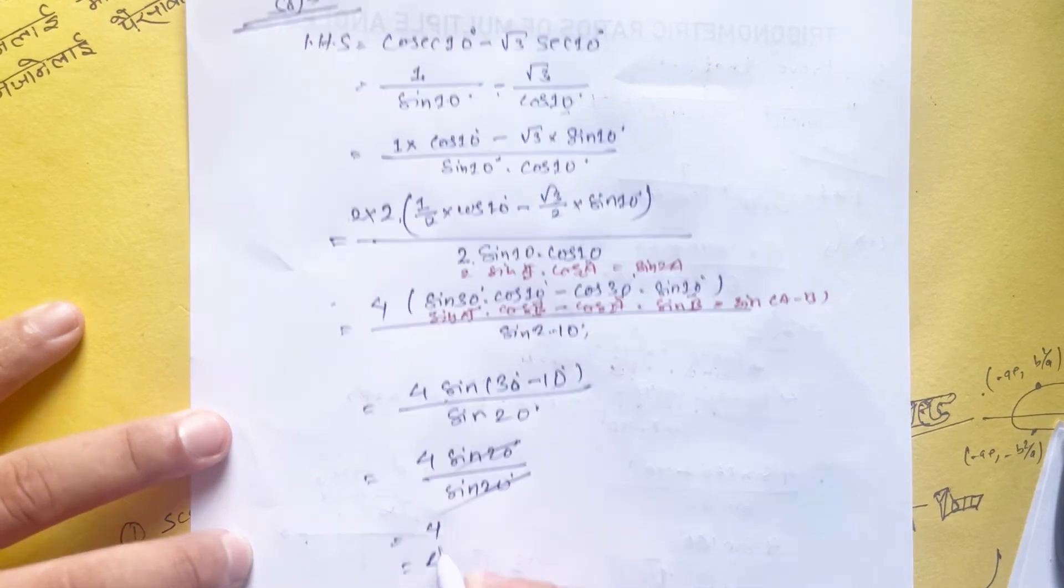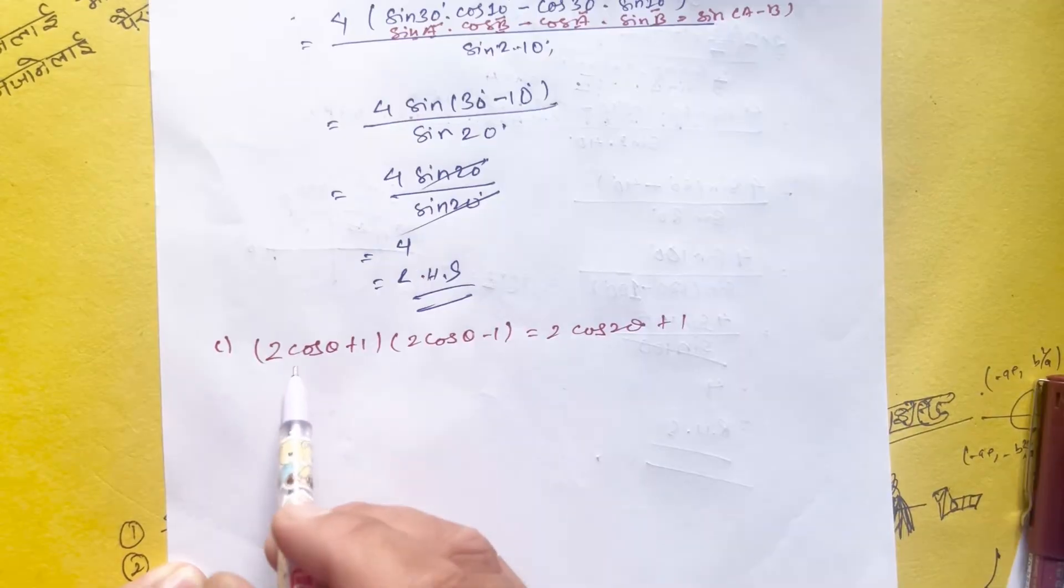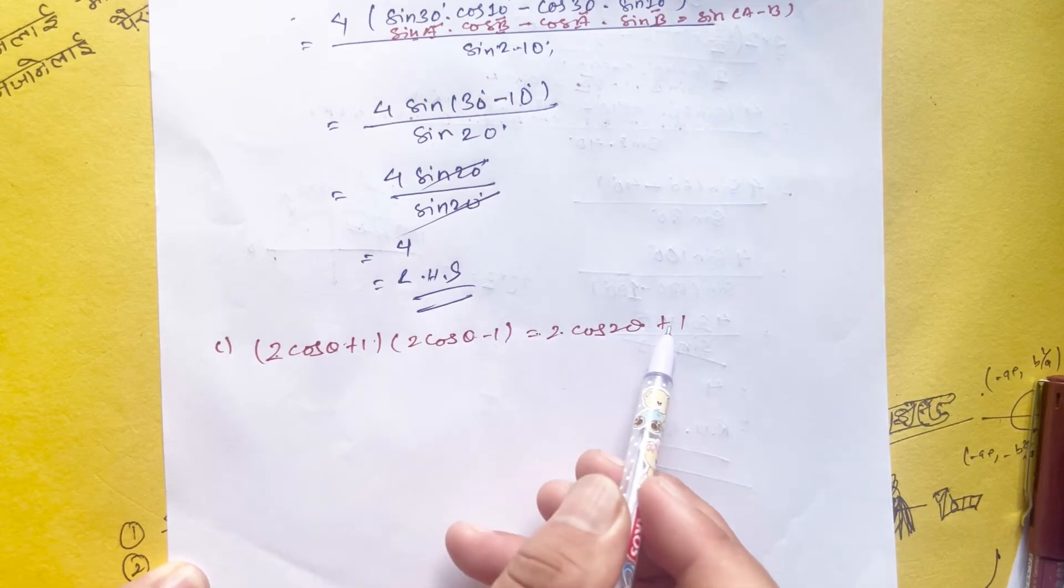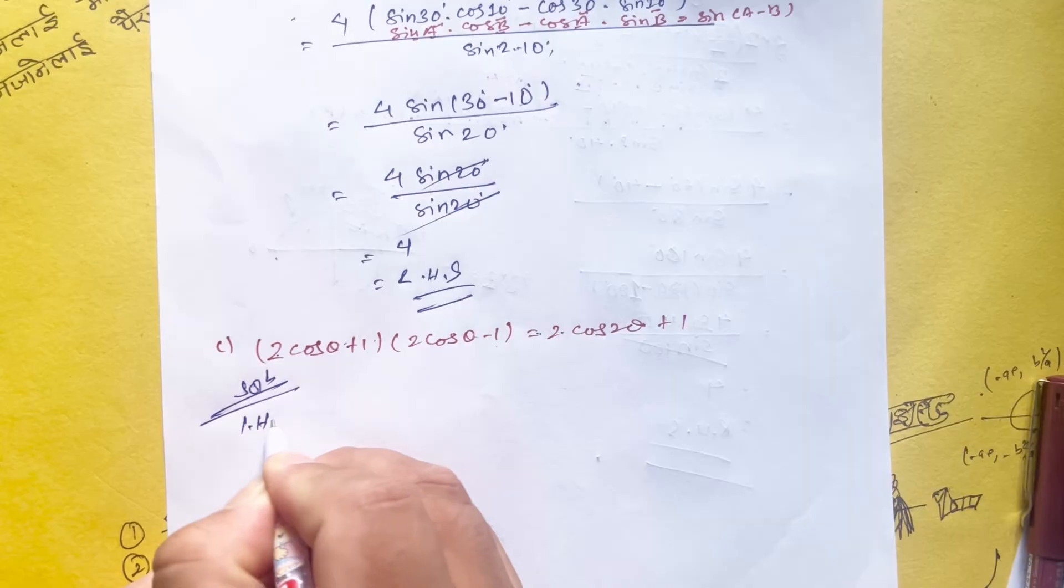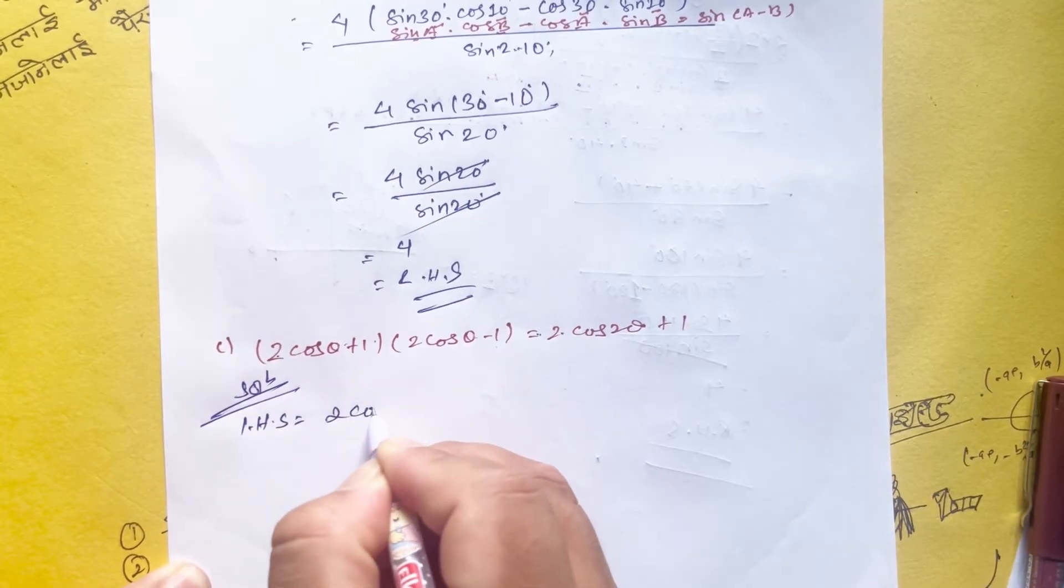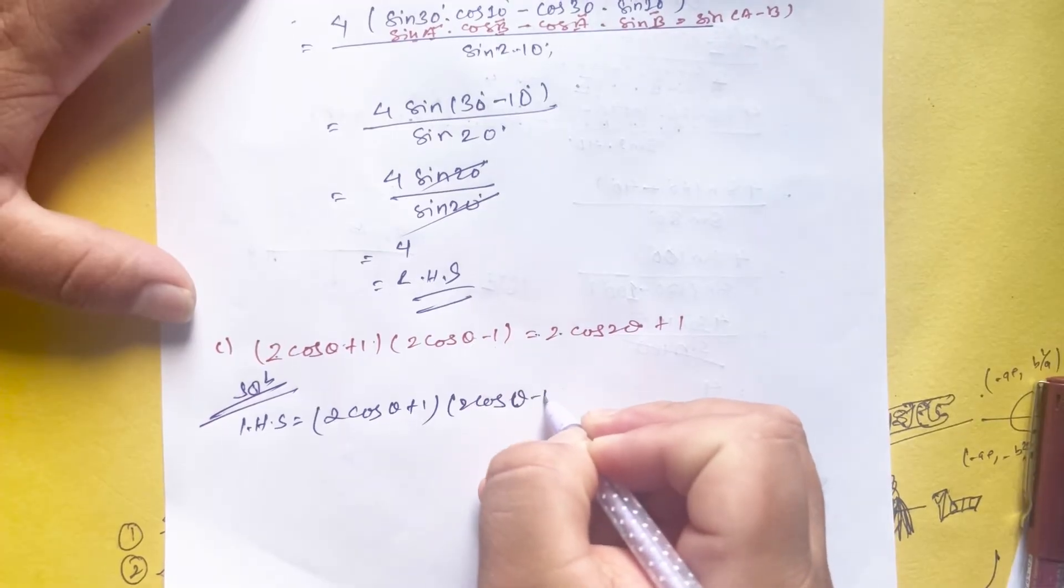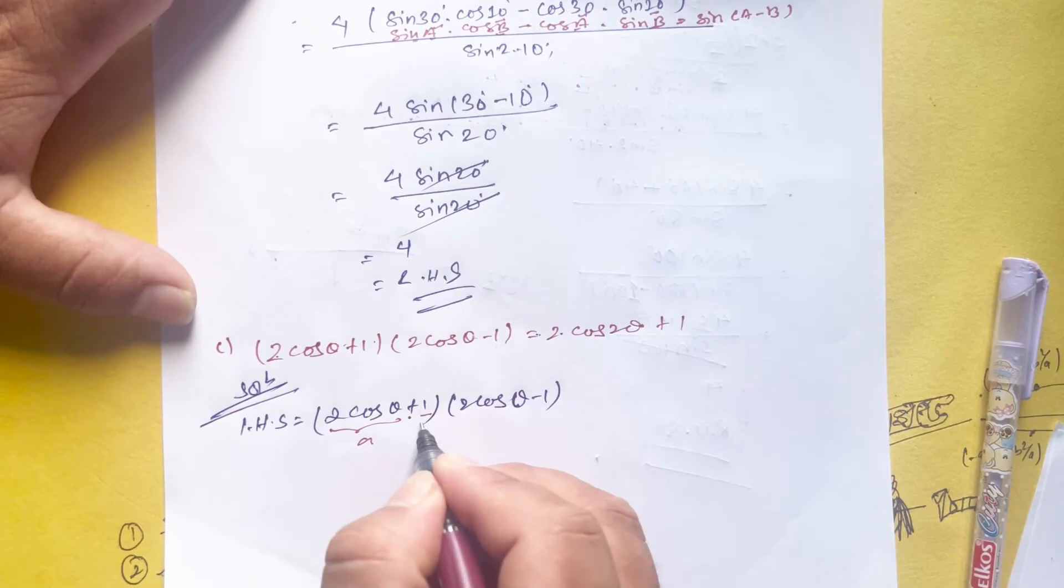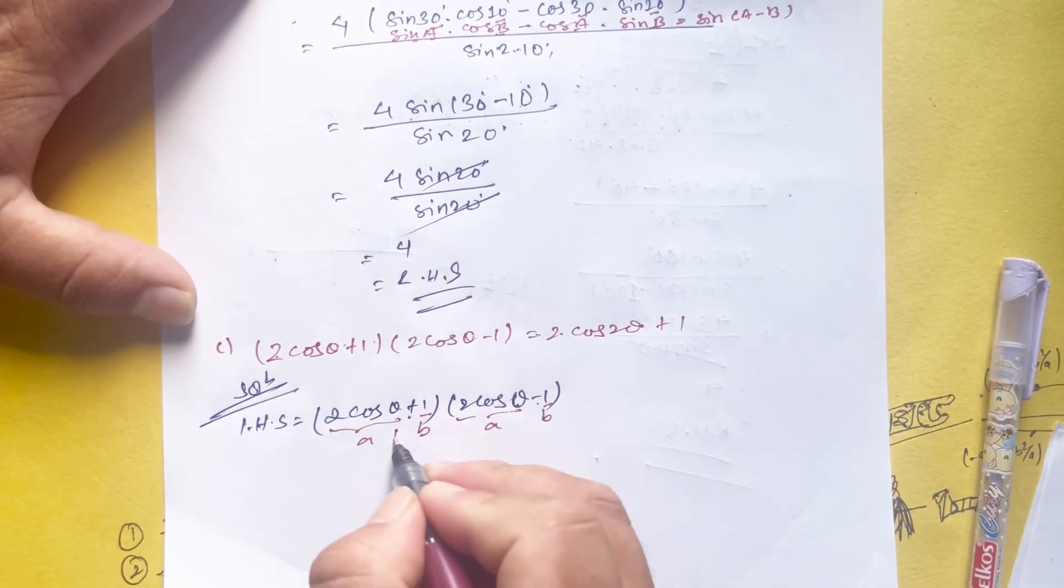That is our RHS, hence proved. Next question: Prove that (2 cos theta + 1)(2 cos theta - 1) equals to 2 cos 2 theta plus 1. Solution: LHS equals (2 cos theta + 1)(2 cos theta - 1).